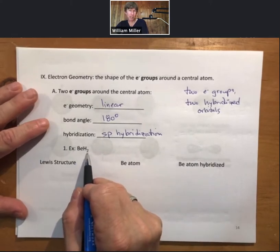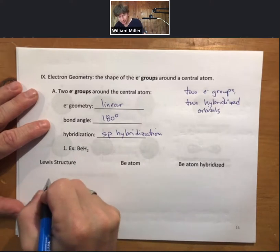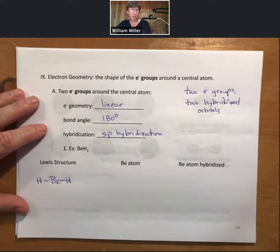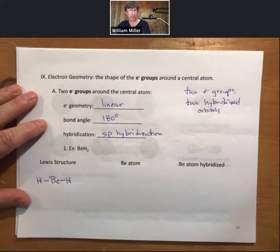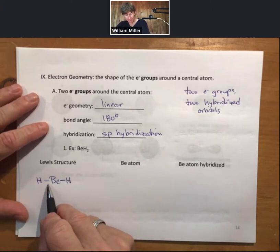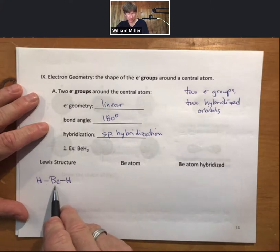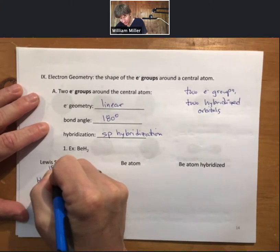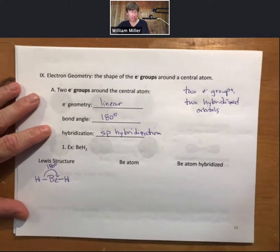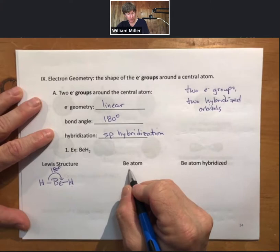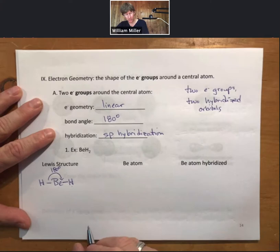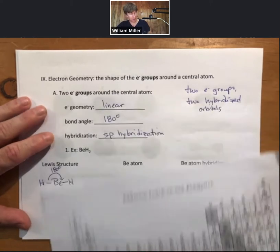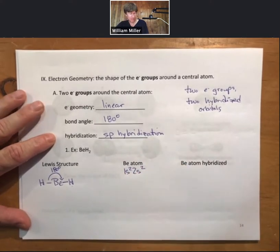Beryllium dihydride is a case where beryllium only wants two bonds and a total of four valence electrons, so this is a good Lewis structure even though it doesn't follow the octet rule. There are two electron groups around the central atom, the bond angle from H to beryllium to H is 180 degrees, and it will have SP hybridization. The electron configuration for the beryllium atom is 1s², 2s² — four electrons total.